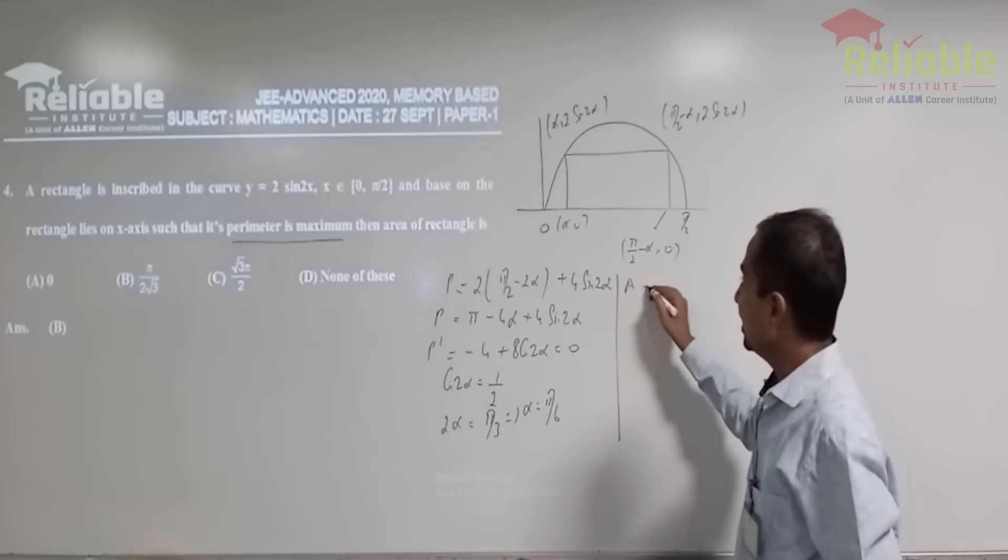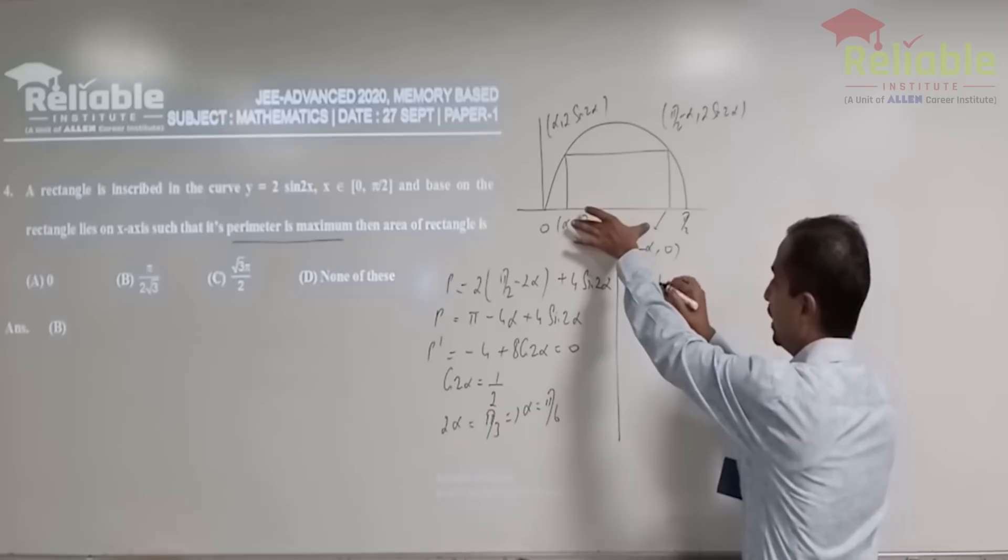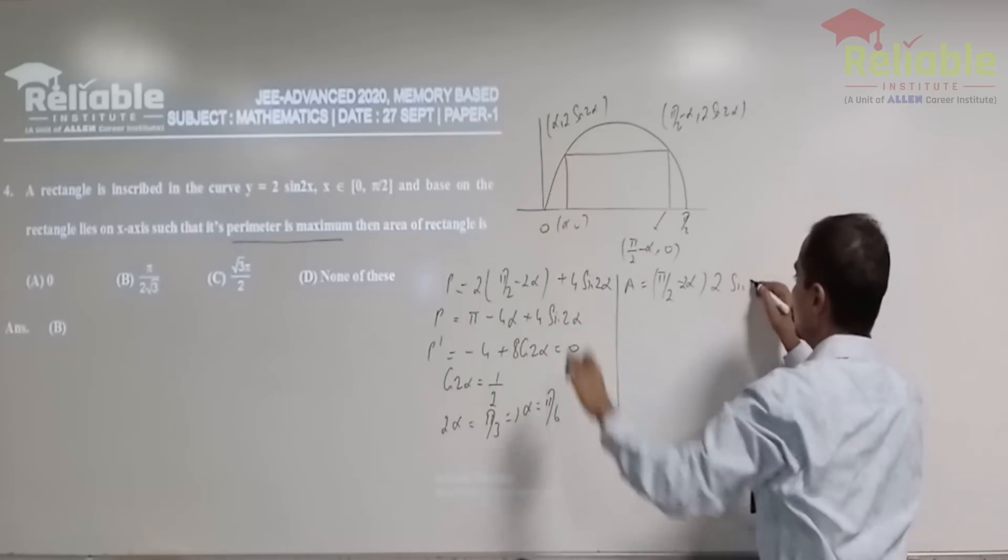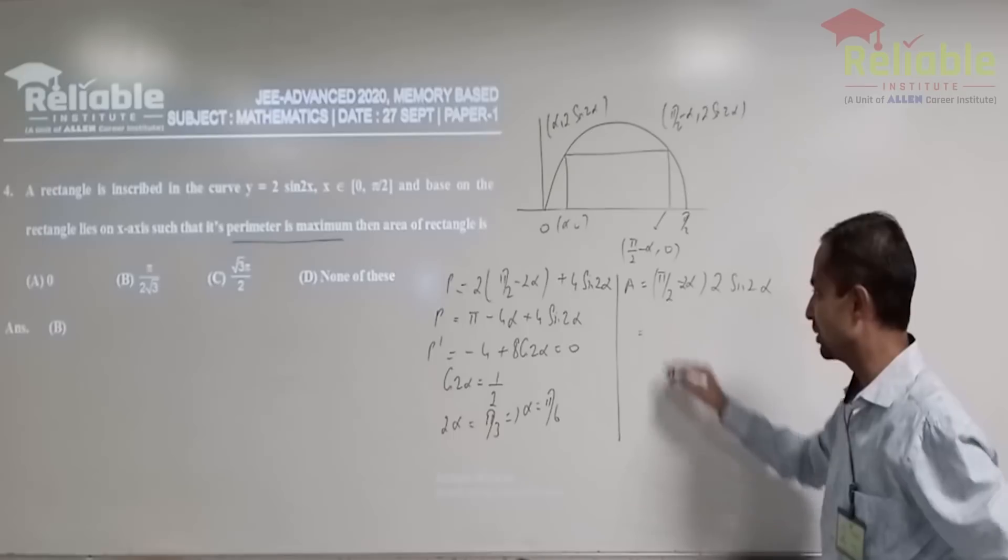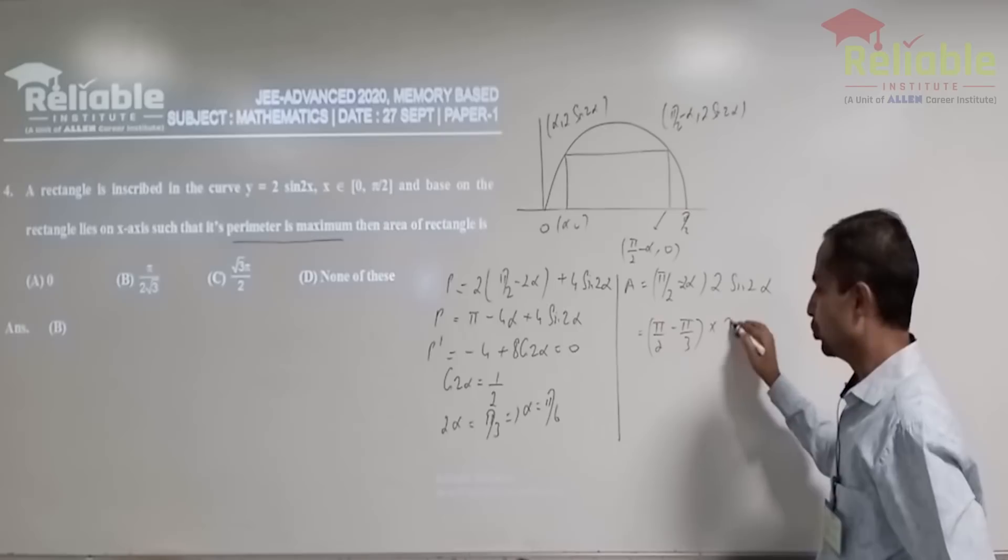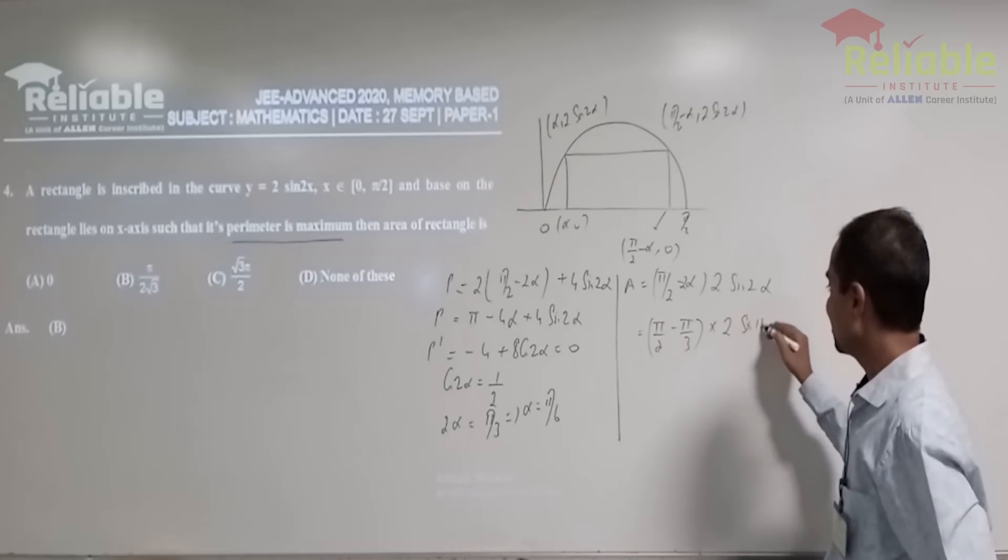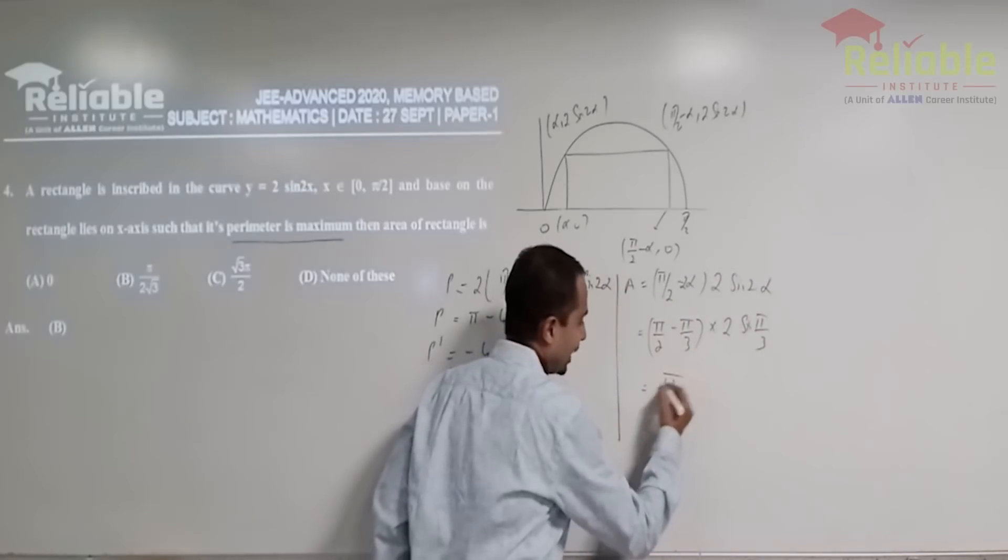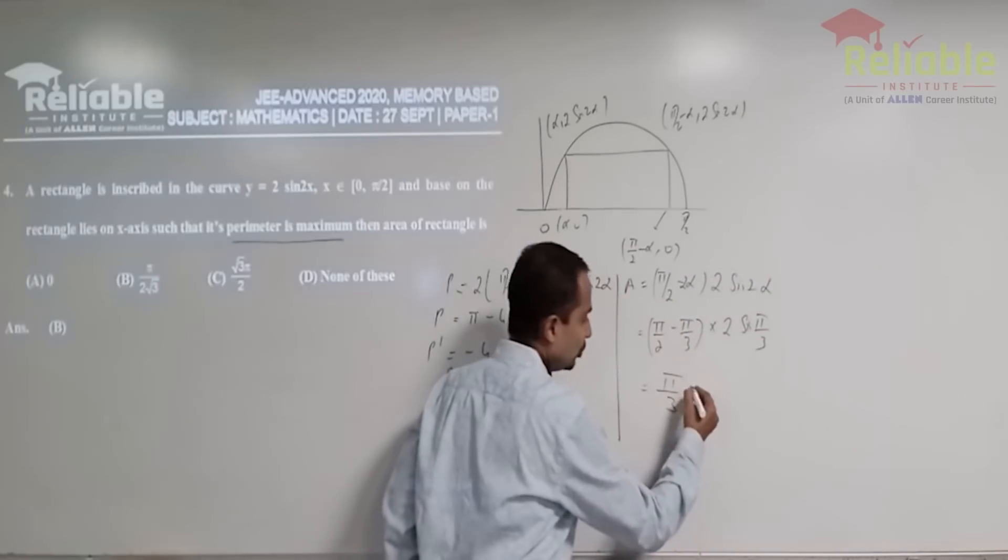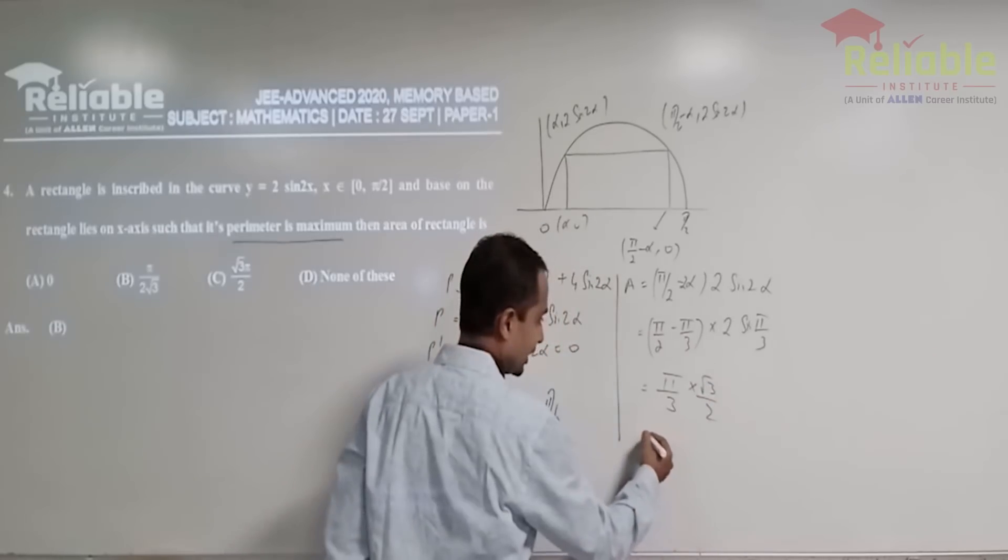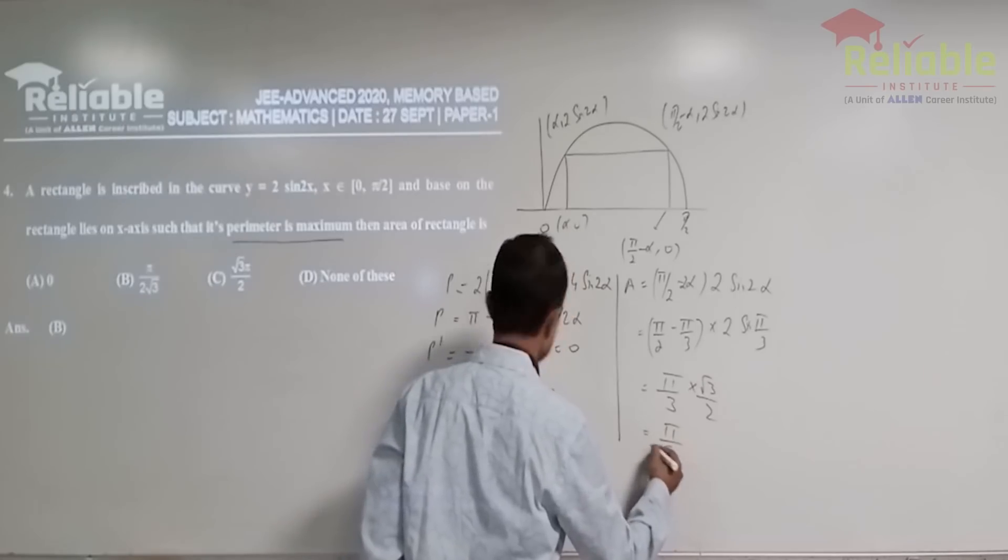Now, what would be the area? Area would be pi by two minus two alpha into two sine two alpha. That is the area. Just plug in the value pi by six over here. So, pi by two minus pi by three into twice sine pi by three. So, you're going to get pi by six into root three. Finally, the answer turns out to be pi upon two root three. So, that's your second choice.